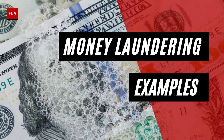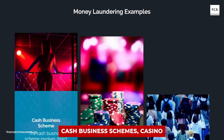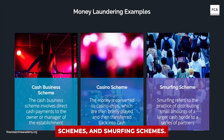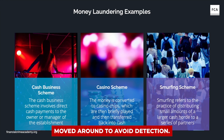There are several common types of money laundering, including cash business schemes, casino schemes, and smurfing schemes. A complete money laundering operation will often involve several of them as the money is moved around to avoid detection.